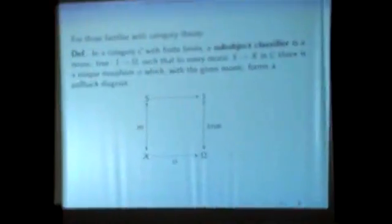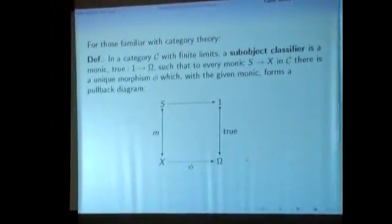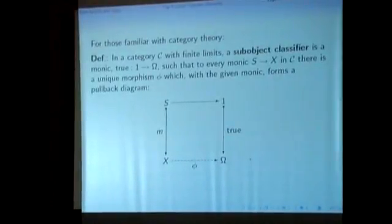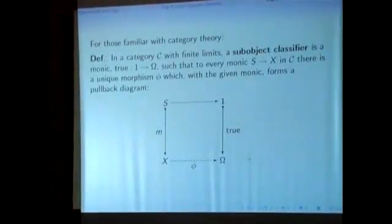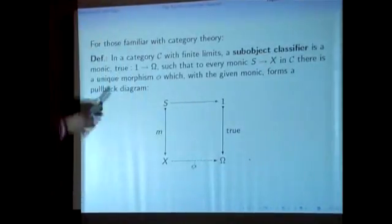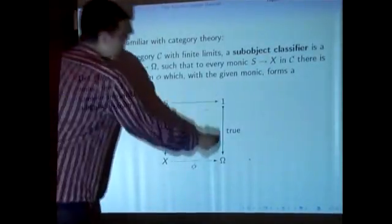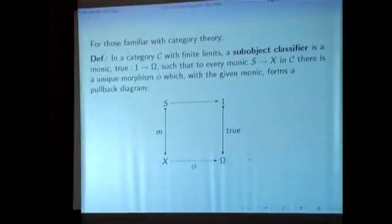But what do we mean by the sub-object classifier? This is a textbook definition. In a category C with finite limits, the sub-object classifier is a monic. Actually, it's not only this omega. Usually I call omega the sub-object classifier, but in fact, the whole right side of the diagram is called a sub-object classifier, to be very careful. And this is a monic.